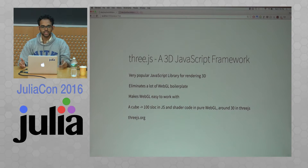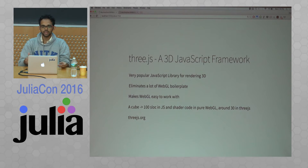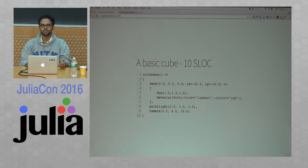Three.js eliminates a lot of the WebGL boilerplate and makes WebGL pretty easy to work with. For example, a basic cube is around 100 lines of code in just WebGL, while it's around 30 lines of code in Three.js. You can find more details at three.js.org. And with Three.js.jl, you can make a simple basic cube in just 10 lines of code.